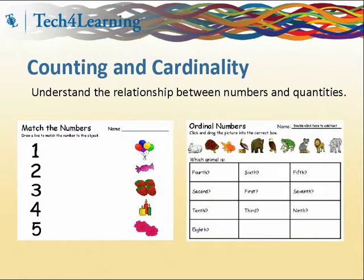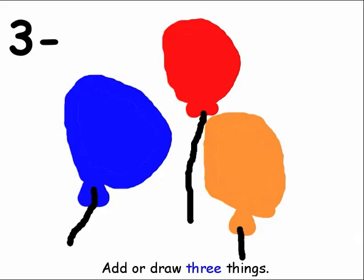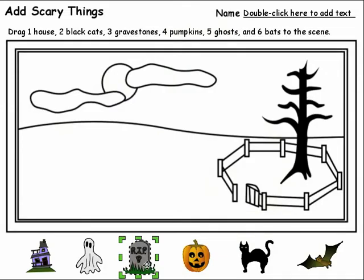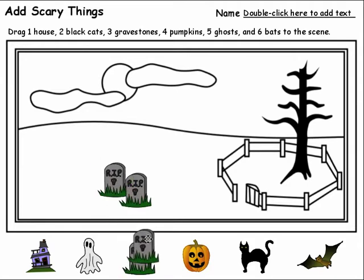A range of counting and number activities help kindergartners learn the relationship between numbers and quantities and to connect counting to cardinality. Students can create a number book using the paint tools or stickers to represent their understanding of sequencing numbers. Many counting activities are tied to holidays and real-world examples, engaging students in necessary practice while giving them opportunity to express individuality.